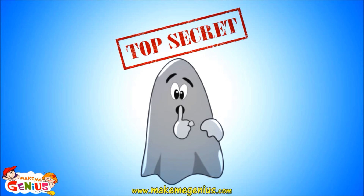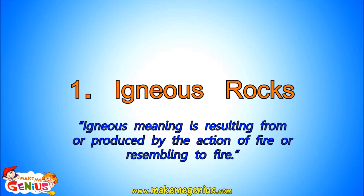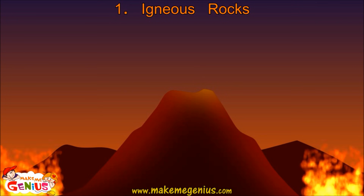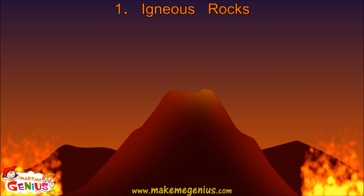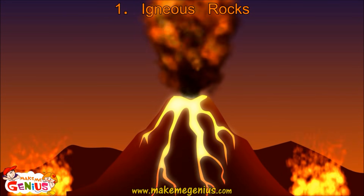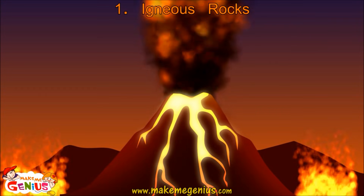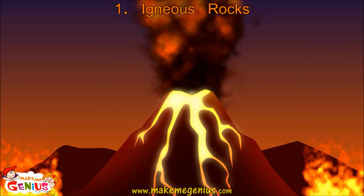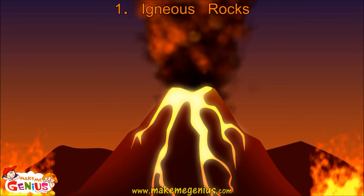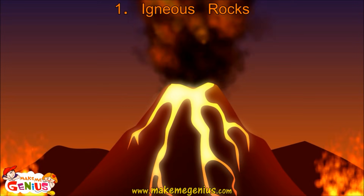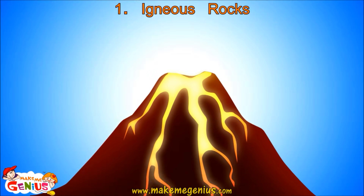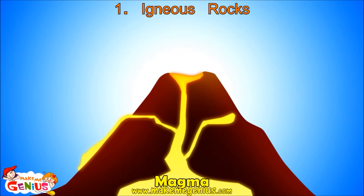Let's first learn about igneous rocks. To understand igneous rocks, let's first know the meaning of igneous. Igneous means resulting from or produced from fire. To understand it further, let's first understand the volcano. Inside the Earth's core, there are a lot of molten metals and minerals. These melt due to very hot temperatures inside the Earth. The melted material is called magma.